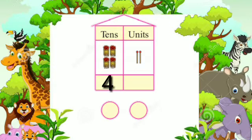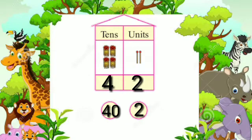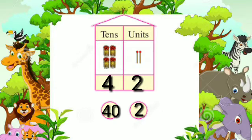In this example, there are 4 tens bundles, so we get 40 units. That's why the place value of 4 is 40. And in the units place there are 2 open sticks, so its place value is 2. The number is 42.